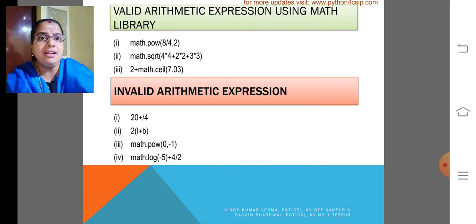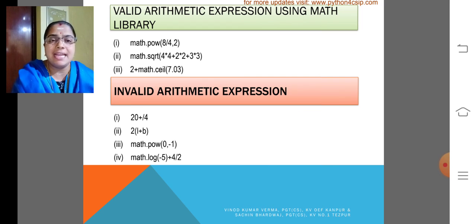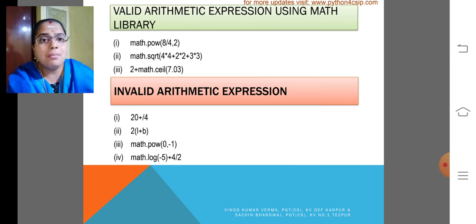So, my dear children, here are some valid arithmetic expressions I had used. Math.power of, math.square root of, and invalid math functions. Power of 0 raised to minus 1, that is invalid. Math.log of 2 values I had given, that is also an invalid one.